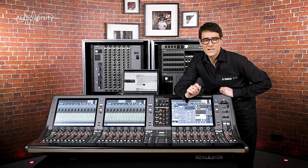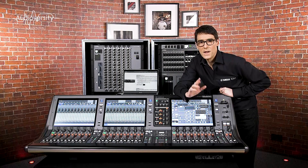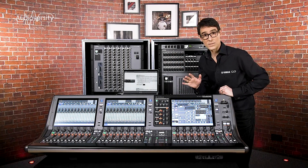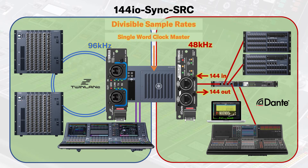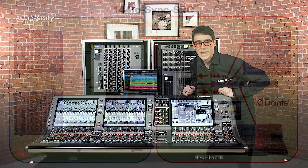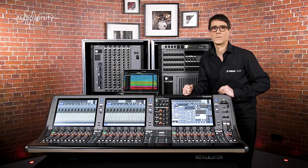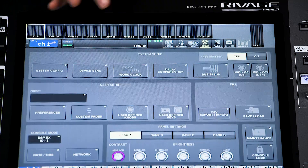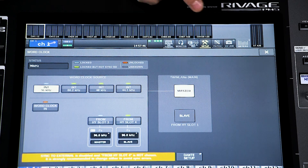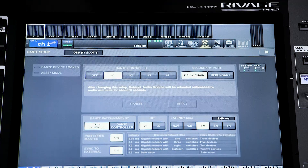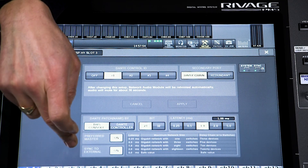The second mode is 144IO sync SRC. This allows RIVAGE and Dante to use different sample rates, but they must share the same word clock source. Use this when it's okay for all other Dante devices to be slaves — it's ideal when the only other device is a multi-track recorder or computer. In this mode you can run RIVAGE PM at 96 kHz and set the Dante network to 48 kHz to save recording disk space, and there's no loss of audio channels. You make the DSP engine the word clock master and set the HY Dante card to preferred master with sync to external on.